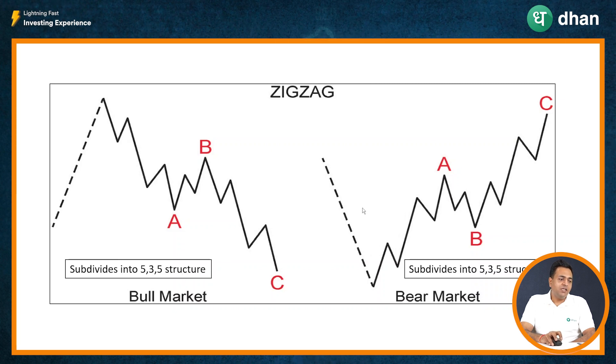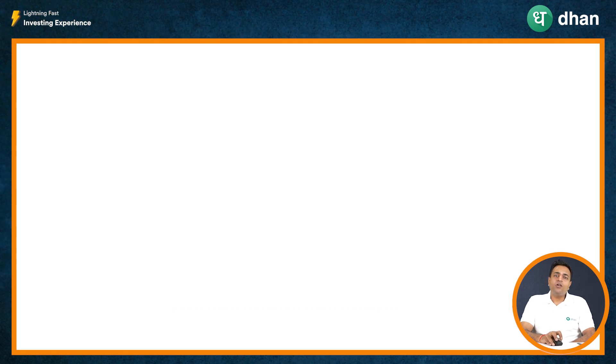Conversely, in the case of a bear market, the same structure would be visible and the corrective wave will subdivide into a structure of 5-3-5.